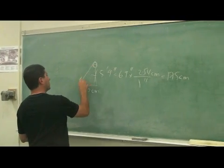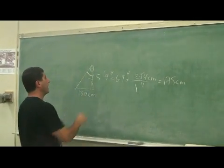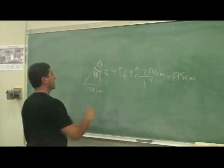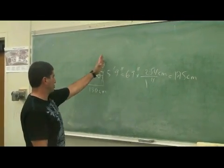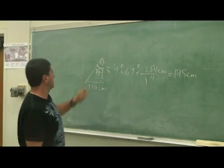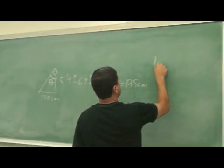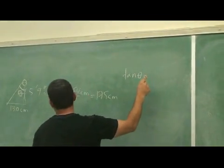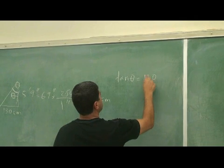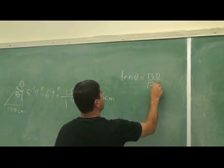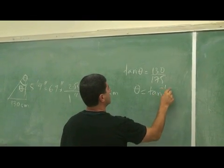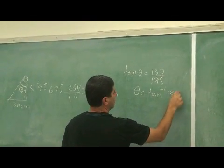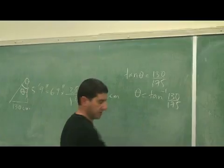So this angle that the shadow is making, you can call that theta, the angle that the shadow is making with respect to the top of my head here. We can say tangent of theta is equal to 130 divided by 175, and then take the tangent inverse of 130 over 175. So let's calculate that. I'm going to calculate what that angle is.